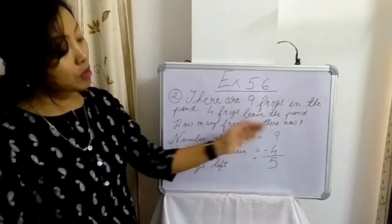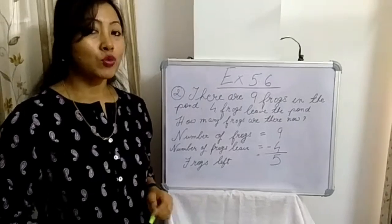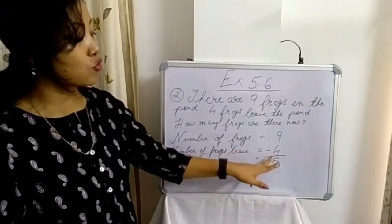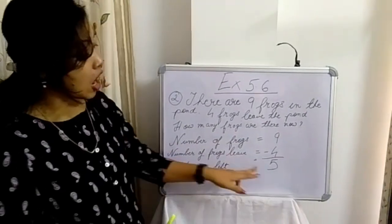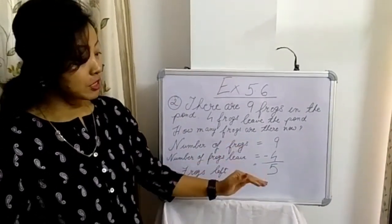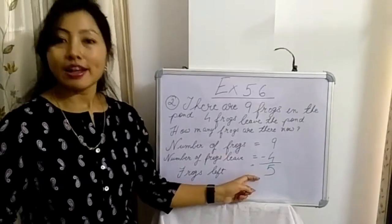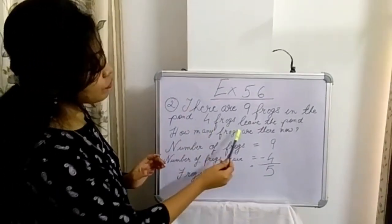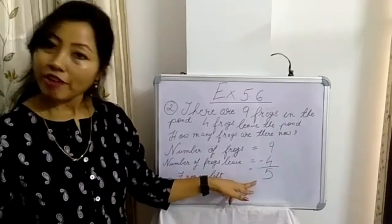So if from 9, 4 frogs already left, what is the answer? You have to subtract 4 from 9. Then how many frogs are left? If you subtract 4 from 9, you will get the answer 5. So how many frogs are there now? The answer is 5.